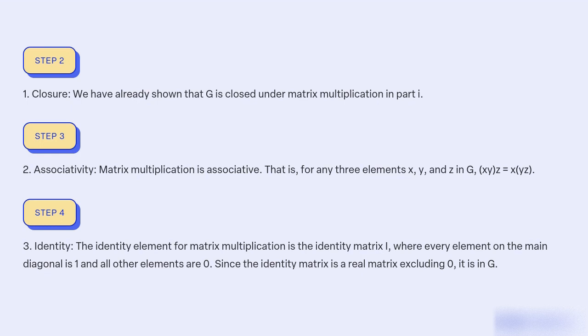Three, identity. The identity element for matrix multiplication is the identity matrix I, where every element on the main diagonal is one and all other elements are zero. Since the identity matrix is a real matrix excluding zero, it is in G.